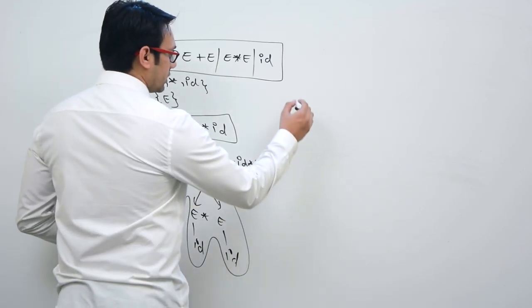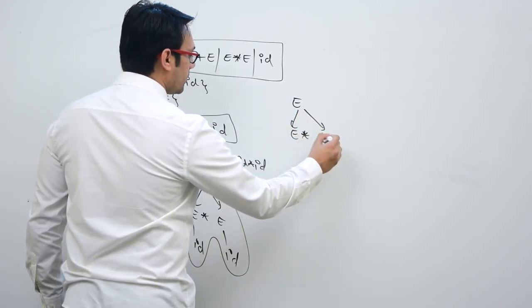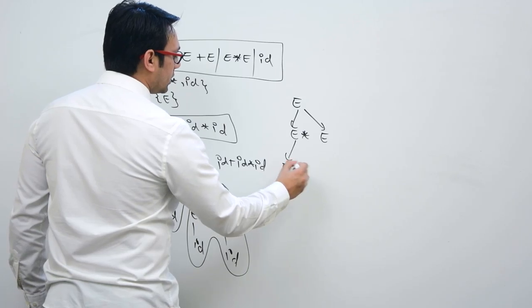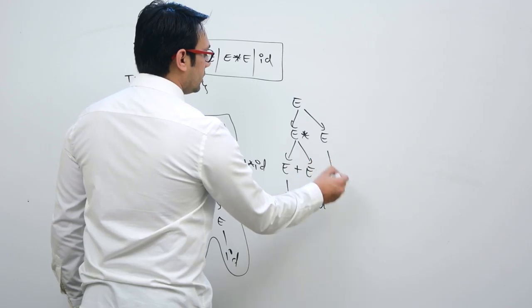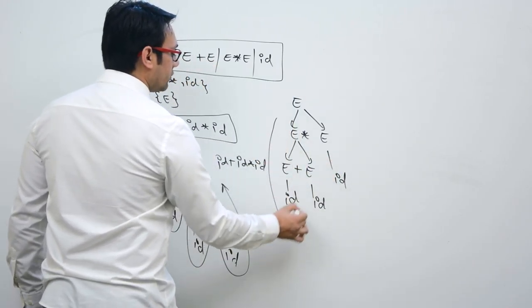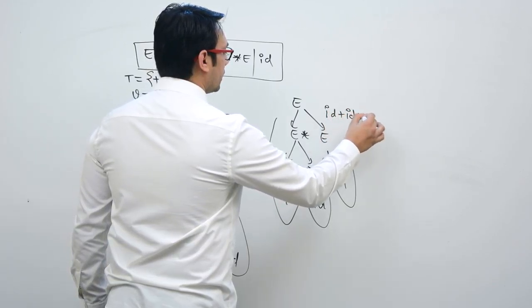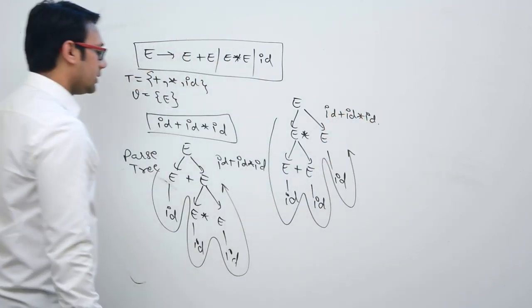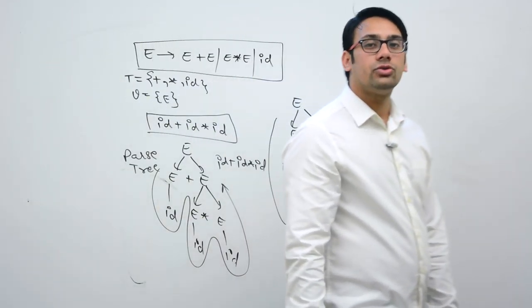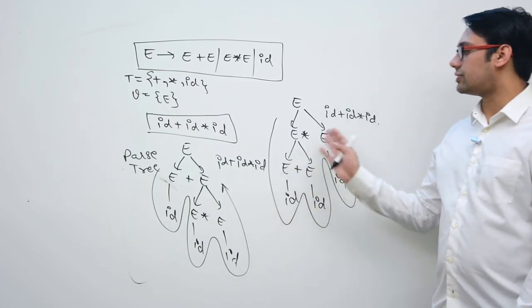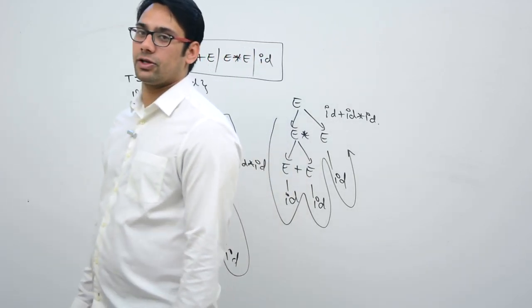Can we get one more parse tree? E can generate E star E. This E can generate E plus E. This E generates ID, this generates ID, and this generates ID. So we can again generate ID plus ID multiplied by ID. That means for generating the same string, we have two different parse trees which are possible. Therefore, we can call this grammar as ambiguous.